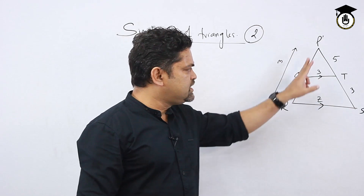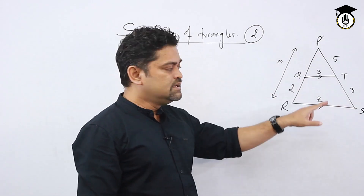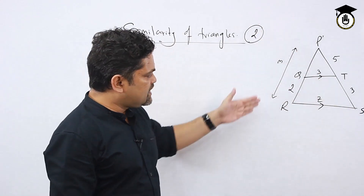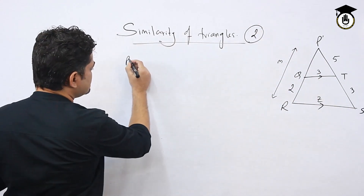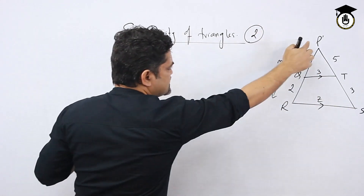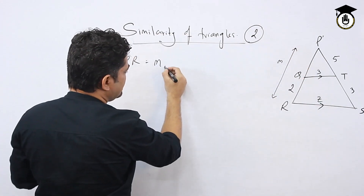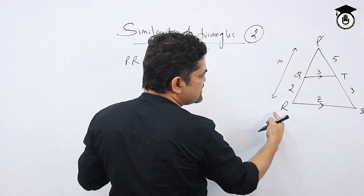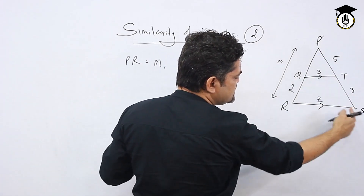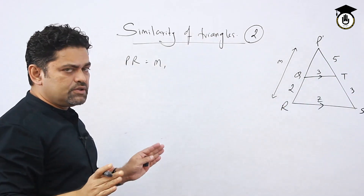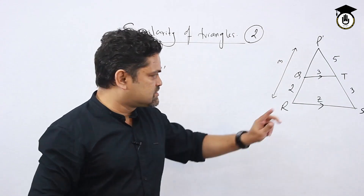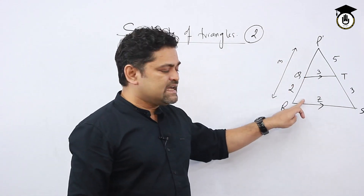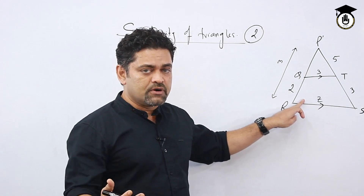Here is another problem I have drawn for you. PRS is a bigger triangle and PQT is a smaller triangle. The corresponding sides are given: PR is M (what we have to find), QR is given, PT is given, and TS is given. We know that if two triangles are similar and these two lines are parallel, we can apply what I showed in my last lecture.